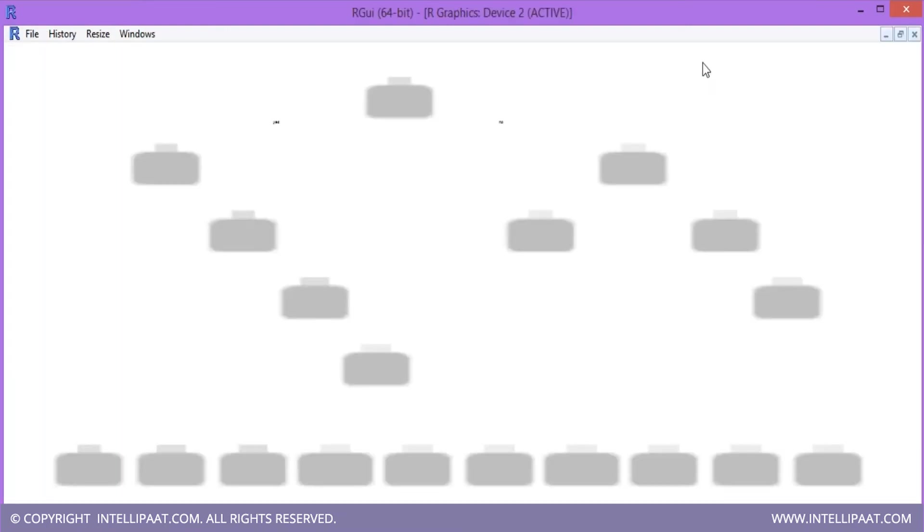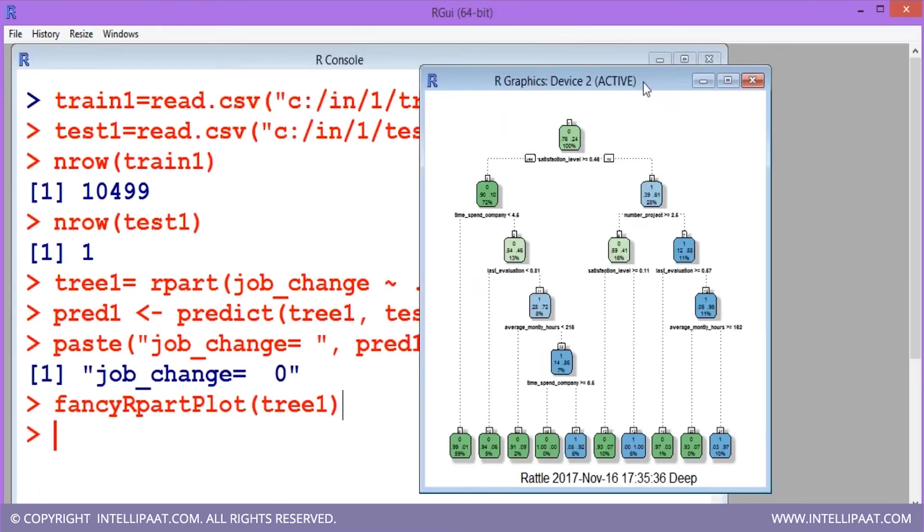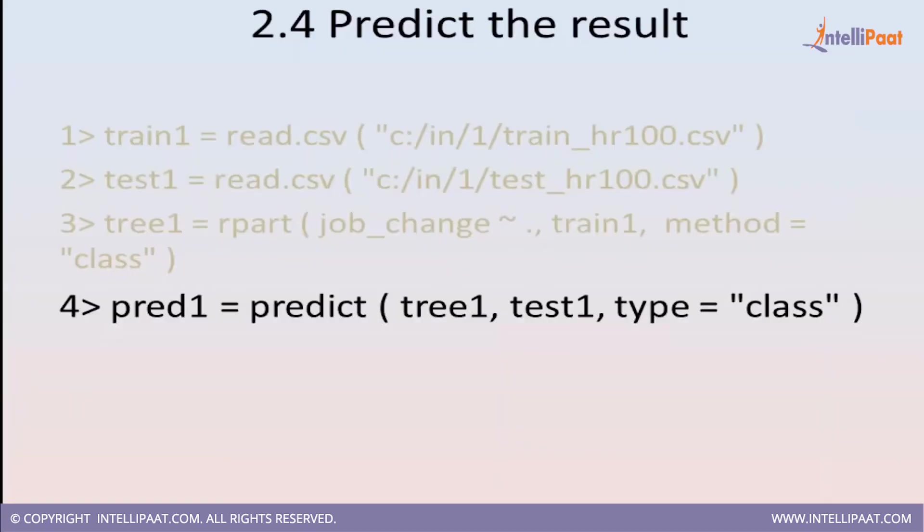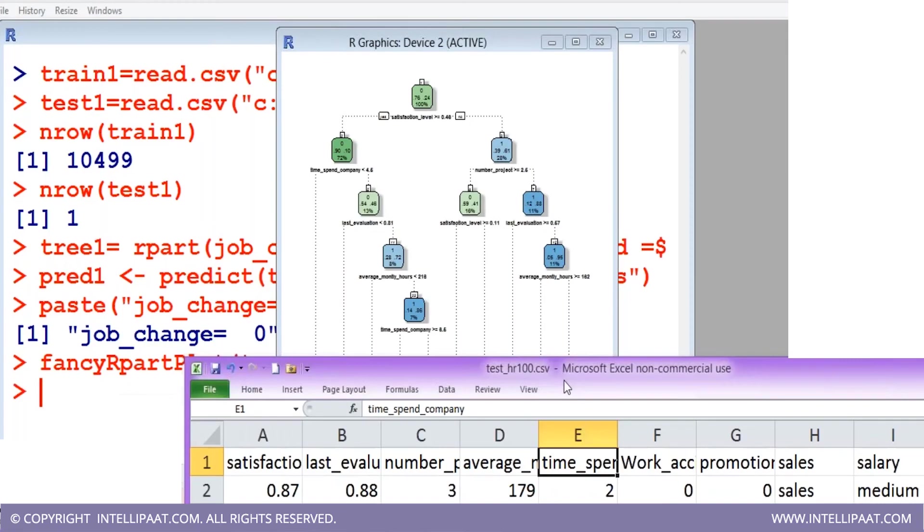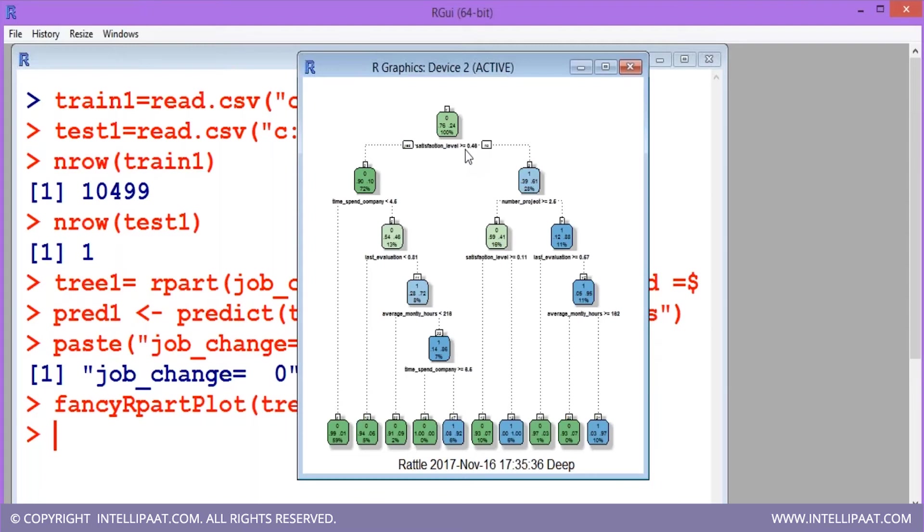We can see here, the first cut is made on satisfaction level. Then time spent in the company, last evaluation, and so on. For example, if we check our data here for this person, his satisfaction level is 0.87. So here the satisfaction level is greater than 0.48, so it goes here.